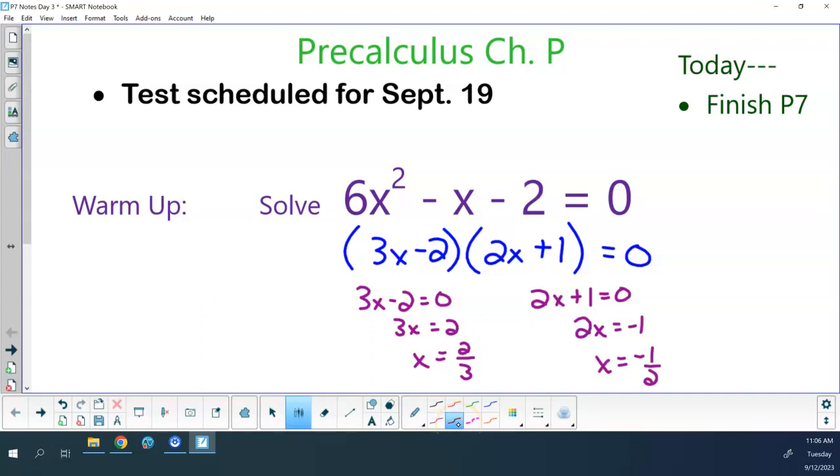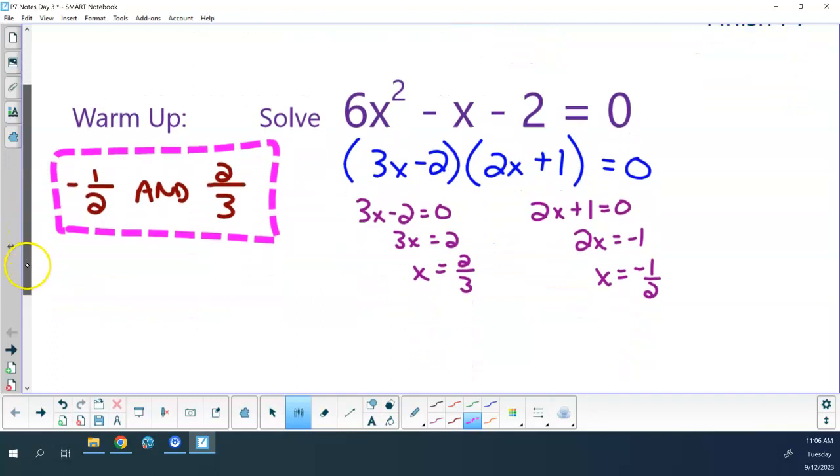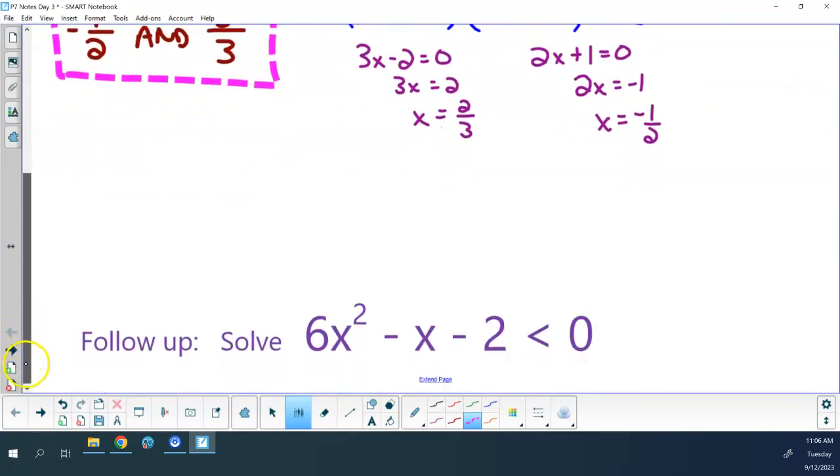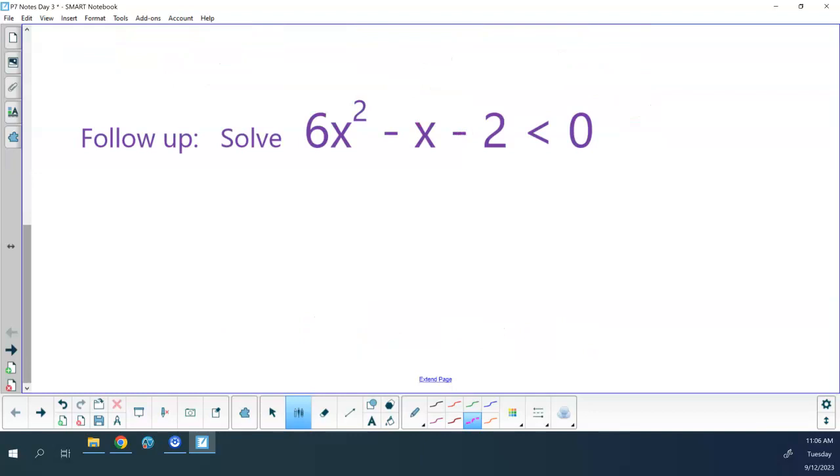So I get two thirds and negative one half. Agree? Okay. Extension question off of that. Now that we've solved that, what would this graph, without actually graphing it, what would this graph look like? What shape is this left side function? What do we call that? Parabola. Yep. Opening up or opening down?